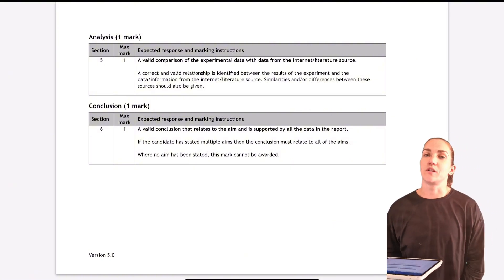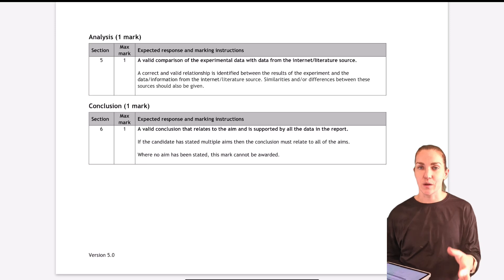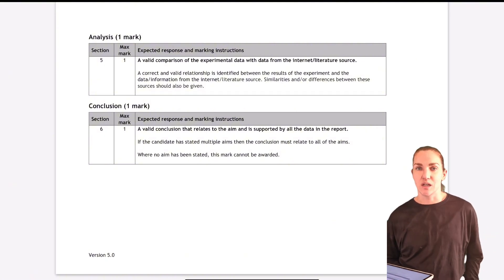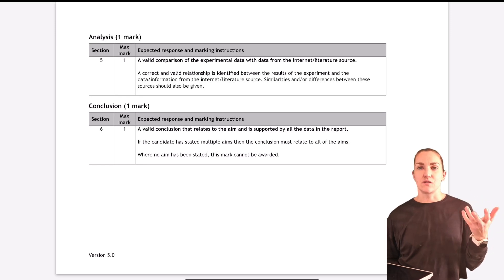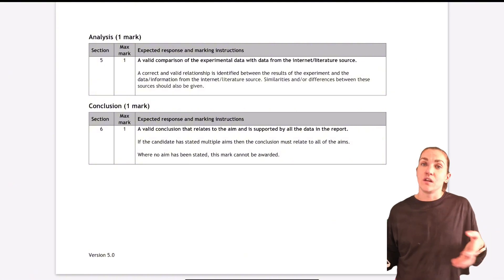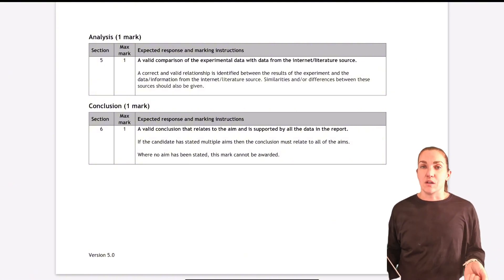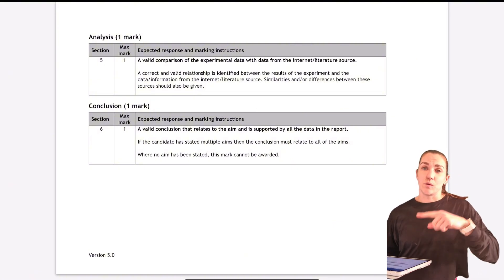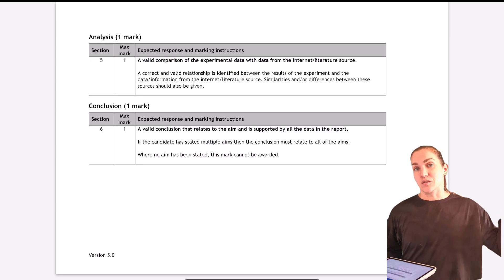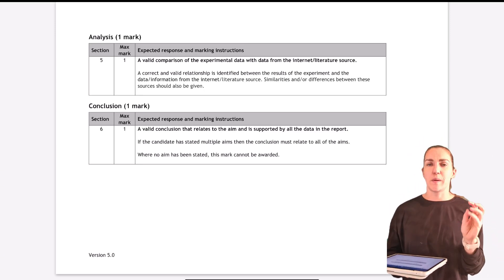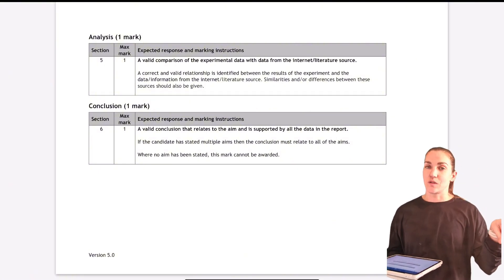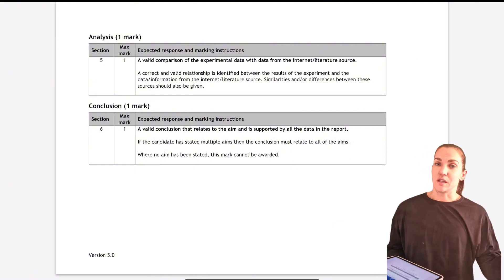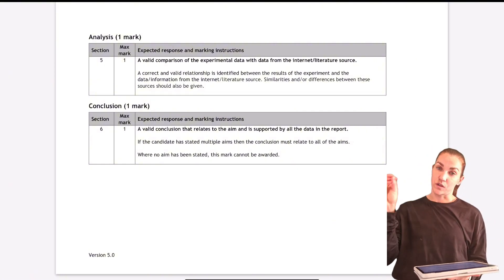Then there's the conclusion mark — this is pretty straightforward. You just need to look at your aim, rephrase it as a question, and answer that question, supported by all the data in your report. The more specific you make your conclusion, the harder you make it for yourself, so keep it generic. If your aim was to investigate the effect of concentration on the rate of reaction and you found concentration increases the rate, just say 'As concentration increases, the rate of reaction increases' — it doesn't need to be more specific than that. Don't add in values, because your values probably won't match the internet's values. If the pattern in your experiment doesn't match the internet, include both findings in your conclusion.